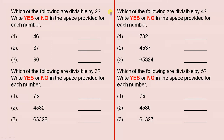Which of the following are divisible by two? Write yes or no in the space provided for each number. So here we've got three spaces — you look at 46 and decide whether it's divisible by two, then write yes or no for 37 and yes or no for 90. You have to remember what the divisibility test for two is, and that is presented in the previous lesson for Year 7, which you'll be able to look up quite easily.